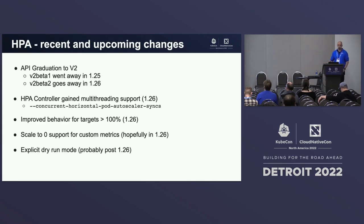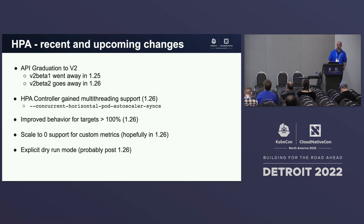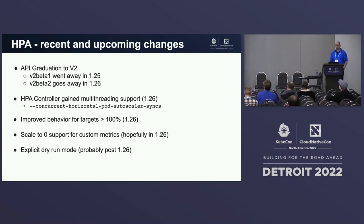HPA has been around for quite some time. We reached stable version V2 back in late 2021. In accordance with the API deprecation policy, the beta versions are about to be removed. V2 beta 1 was removed in 1.25, and V2 beta 2 will be removed in 1.26. If you are still using old HPA definitions, please update them as soon as possible because with your next cluster update they may stop working.